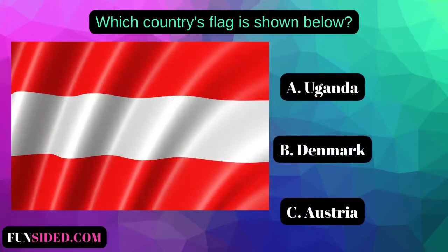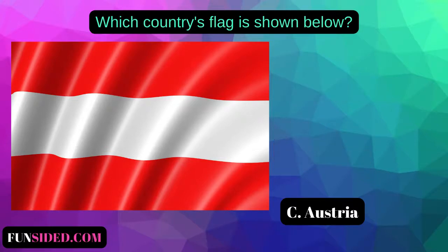Which country's flag is shown below? A. Uganda. B. Denmark. C. Austria. The correct answer is Austria.